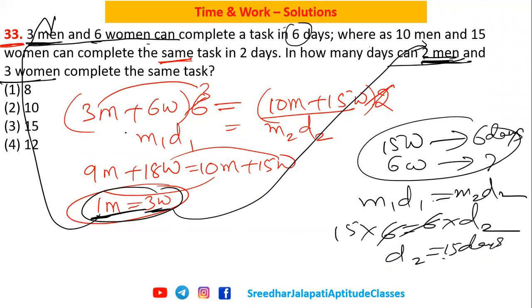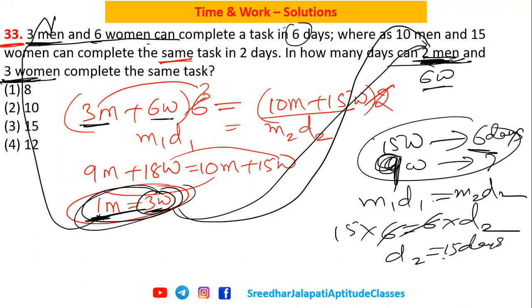It should be 10. If I substitute here, one man equals three, so three men is nine plus six women is 15 women in 6 days. When I substitute in the required, as one man is three women, then two men become six plus three, so total nine women. Total nine: 15 times 6 is 90, nine times 10 is 90, so answer is 10, not 15. Answer is 10, that is option 2. Sorry for the calculation error.